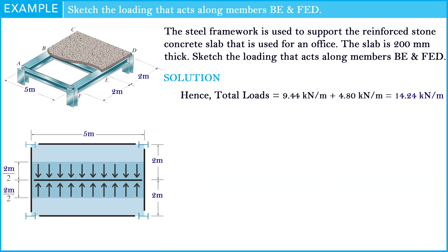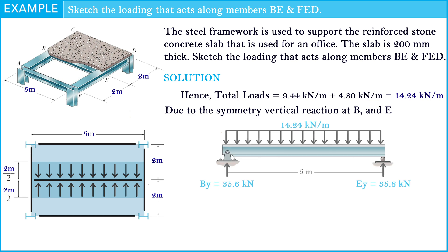Note that the total loads we computed is already in 2 meters as shown in the picture. Due to symmetry, the vertical reactions at B and E can be computed easily. The result of the vertical reaction is 35.6 kN.